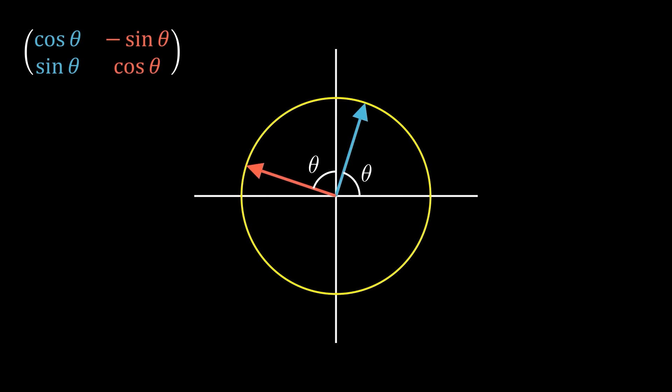And if you've seen matrix multiplication before, you'll recognize this as the two-dimensional rotation matrix, where if you start at any value of x and y, it will tell you where the point ends up after rotation.